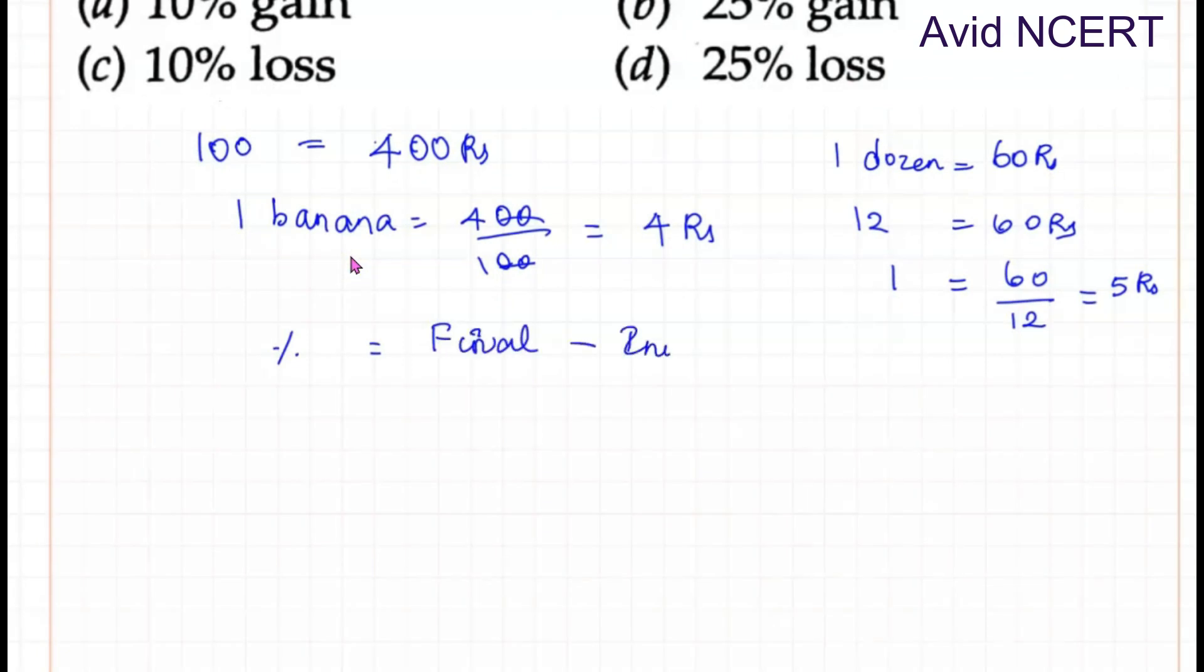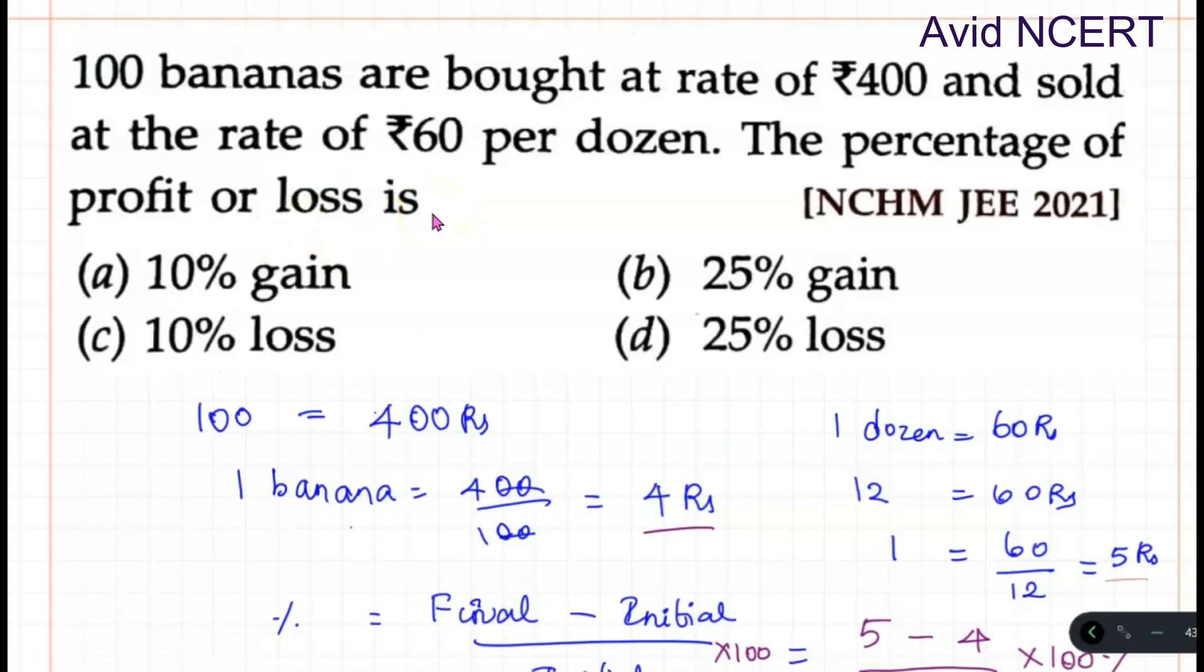Here the final value is 5, so 5 minus the original value 4, divided by 4 times 100 for percentage, which equals 1 by 4 times 100, which equals 25. So that is a profit of 25 percentage. The answer is 25% gain or profit.